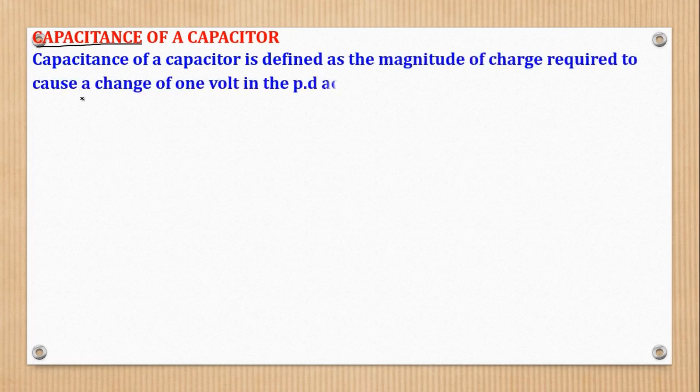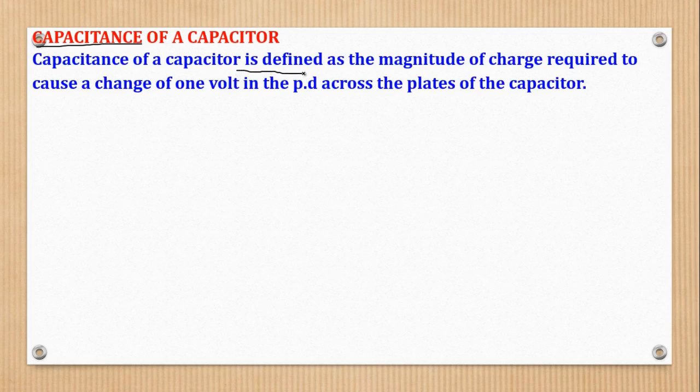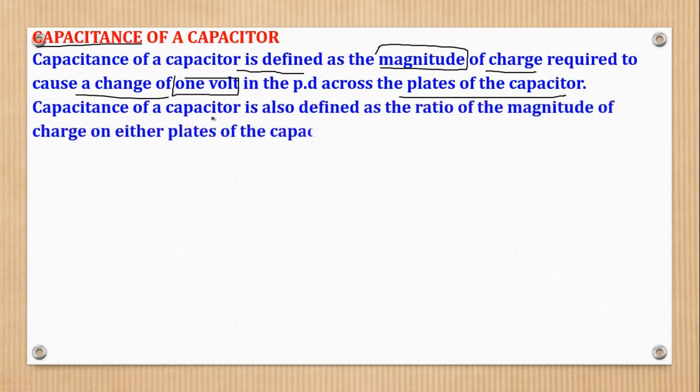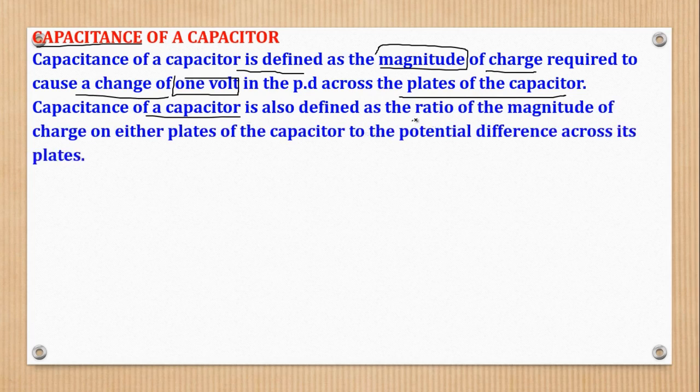So now that we have known what a capacitor is, we can go now to the capacitance of a capacitor. So by definition, the capacitance of a capacitor is the magnitude of charge required to cause a change of 1 volt in the PD across the plates of the capacitor. Also, you can choose to define it in this way. That the capacitance of a capacitor is the ratio of the magnitude of charge on either plate of a capacitor to the potential difference across its plates.